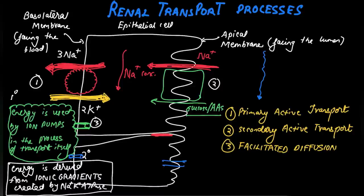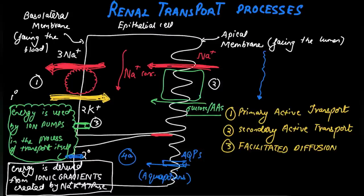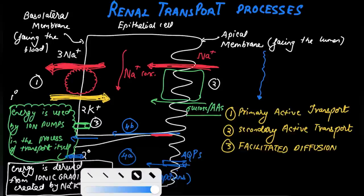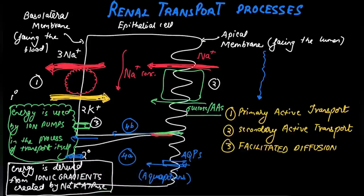Facilitated diffusion of water is mediated by water channels which are called aquaporins — this is transcellular movement of water. There is also paracellular movement of water through the leaky tight junctions. Please remember: the tight junctions get tighter as we move along the nephron, so in the proximal tubule and in the thick ascending limb there is slight movement of water through leaky tight junctions.